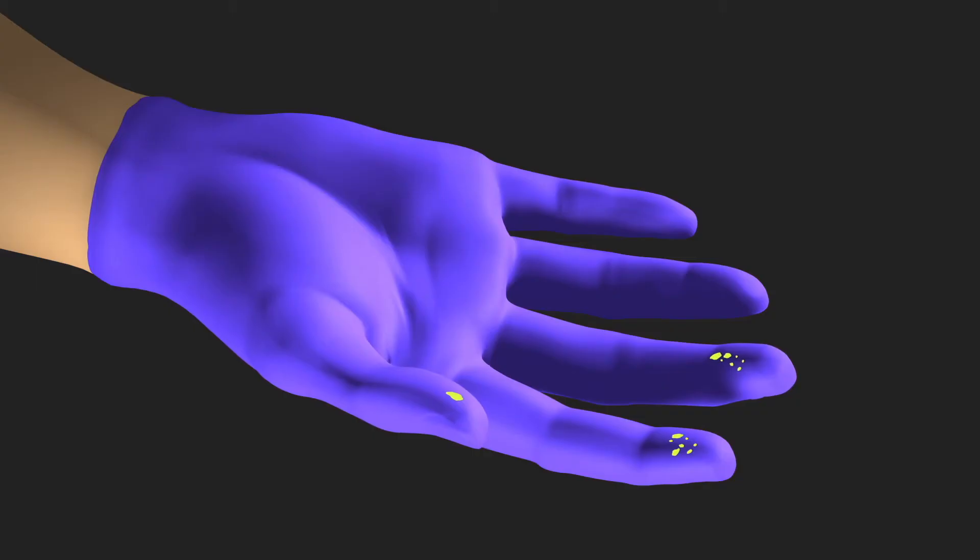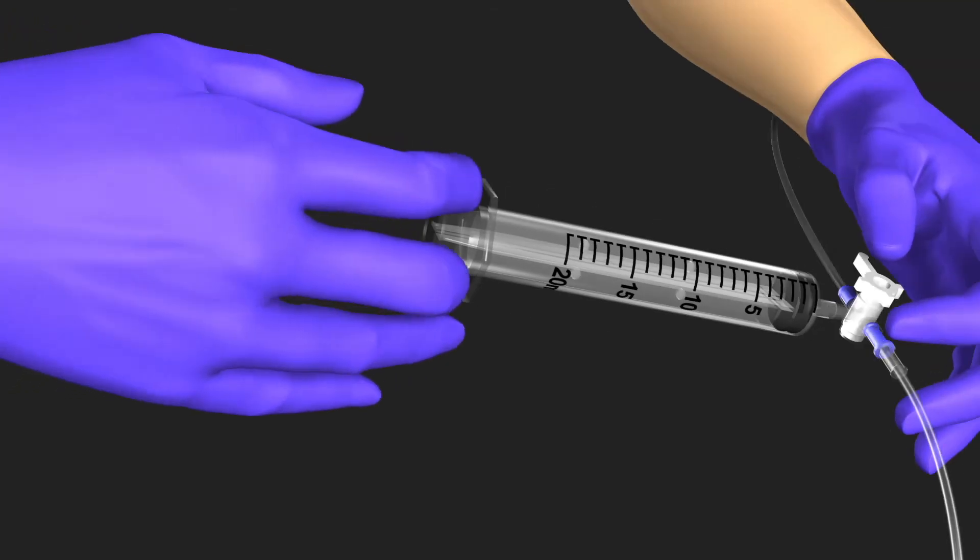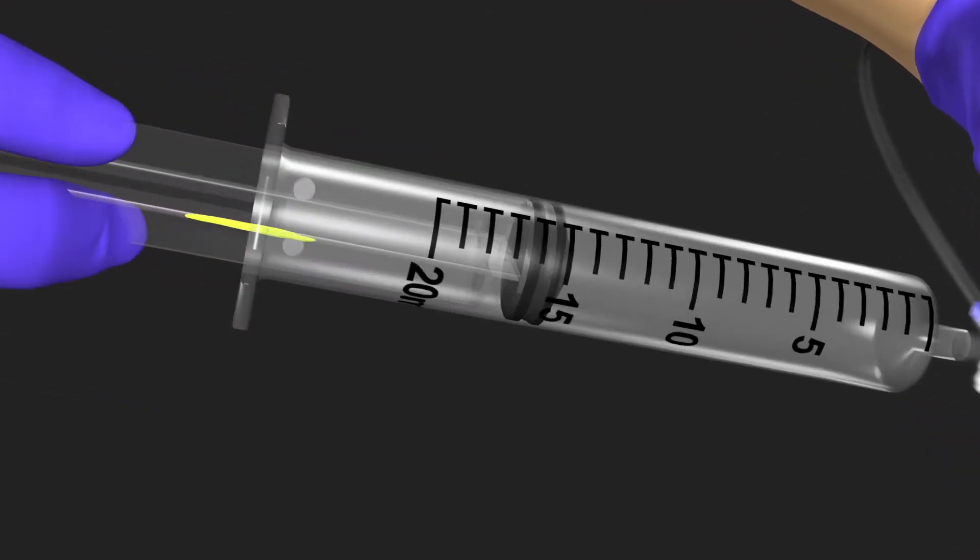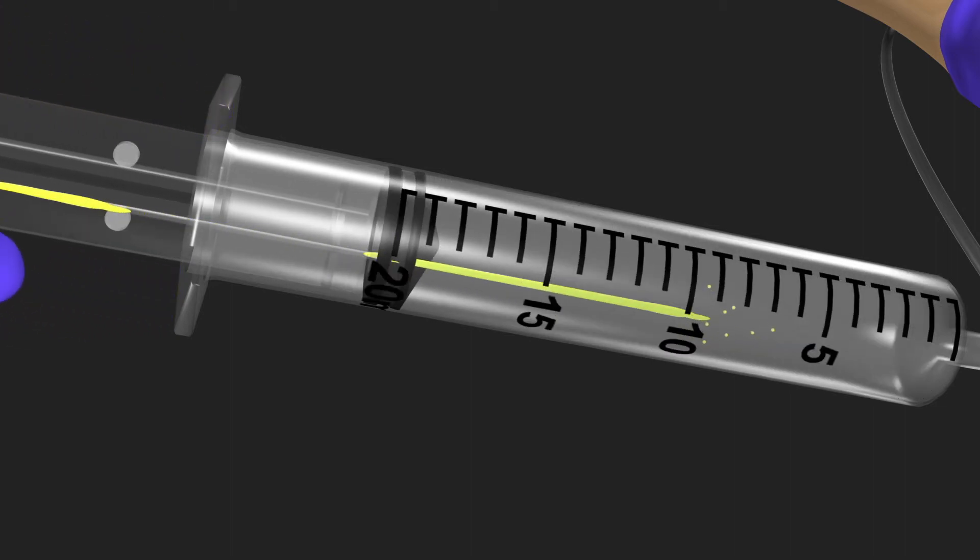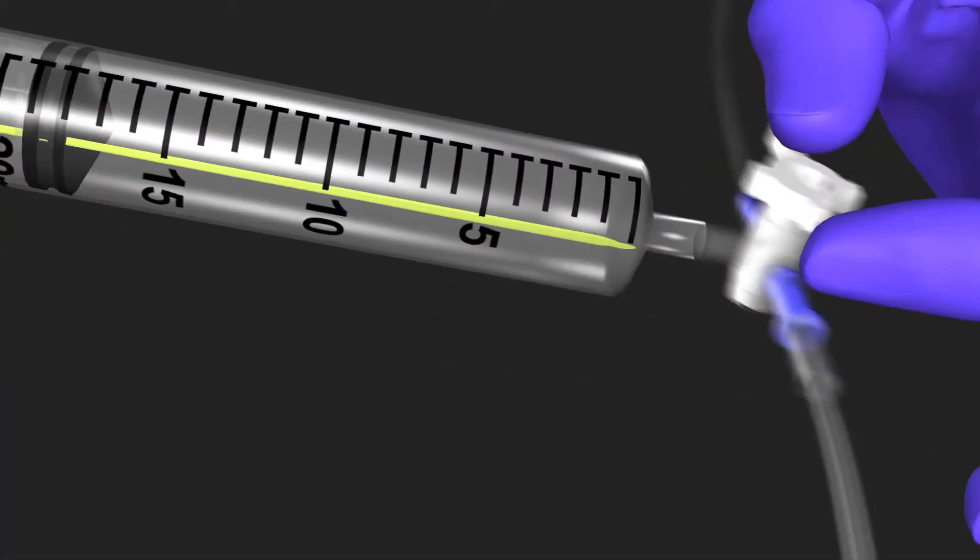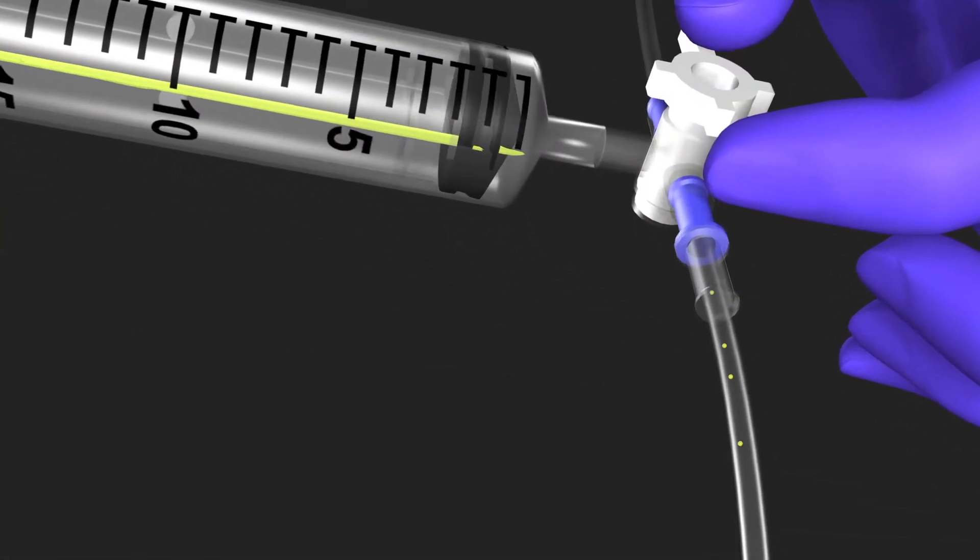Once a gloved hand becomes contaminated, any inadvertent contact with the exposed plunger may introduce bacteria into the syringe. These bacteria then contact the rubber tip of the plunger, which wipes the contamination further into the syringe and subsequently into the fluid being infused.